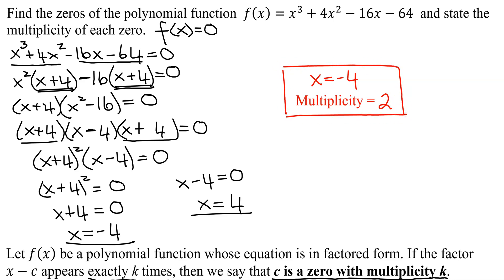And if we look at our other zero, x = 4, it came from x - 4. How many times did it occur? Remember, there's an invisible 1 coefficient written up there, so it occurred one time. So then I know that x = 4 has a multiplicity of just 1.